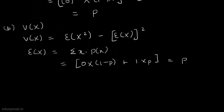The variance of x can be calculated using this formula. So we can write variance of x is equal to p minus p square, which is equal to p multiplied by 1 minus p. And that's what we had to show.